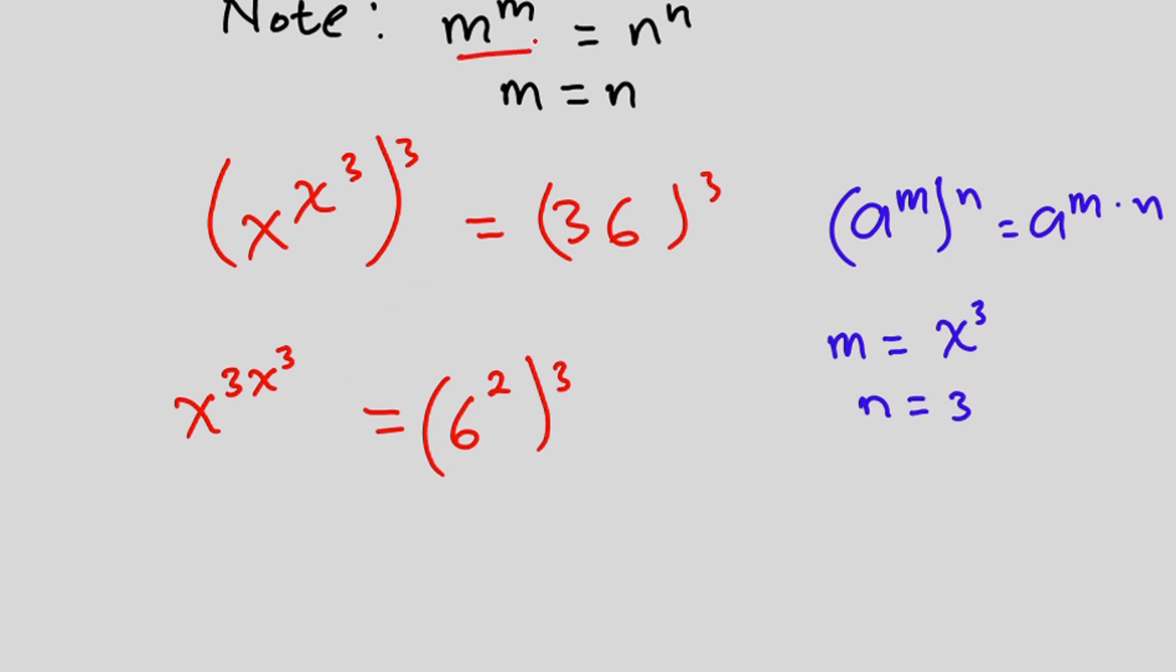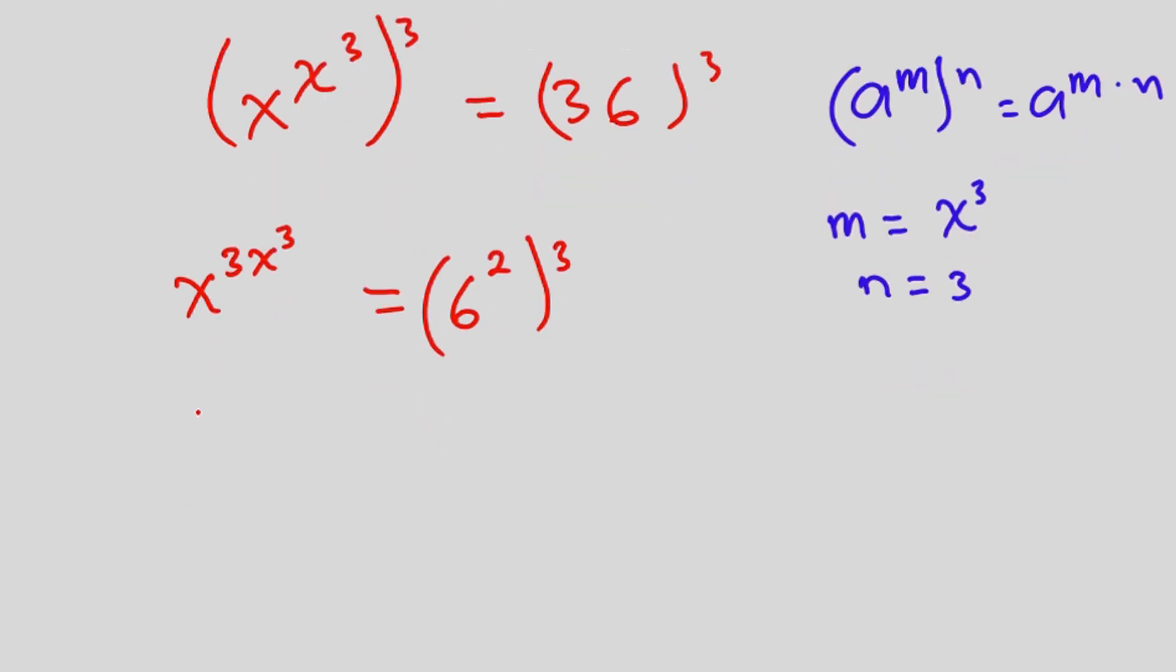To make it clear, let's put them into parentheses. So we're going to have x to the third power to the power x to the third power, and this equals, just like we did before, we're going to multiply this 3 by this 2, so we're going to have 6 to the power 6.